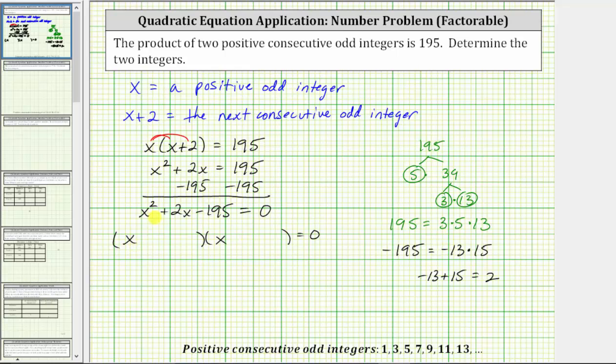One factor is x minus 13. The other binomial factor is x plus 15. The product on the left is equal to zero when x minus 13 equals zero or when x plus 15 equals zero.